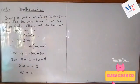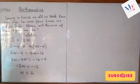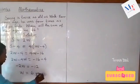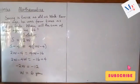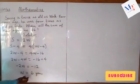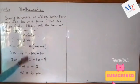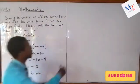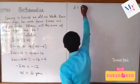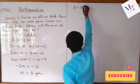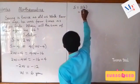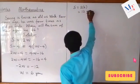So W equals six, meaning Wally's present age is six years old. Then we can get Sonny's age by substituting W equals six into the first equation: S equals two times W, that is two times six, which equals twelve. So Sonny is twelve years old currently.